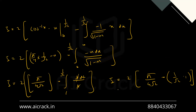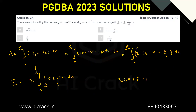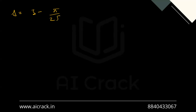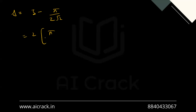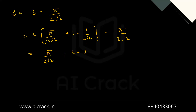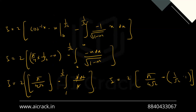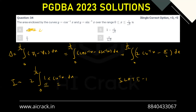Now, what we had to calculate was delta = i minus π/(2√2). So our delta was i minus π/(2√2). Here i is 2 times (π/(4√2) plus 1 minus 1/√2) minus π/(2√2). The π/(2√2) terms cancel out, and we get 2 minus √2 as the answer. So this option should be 2 minus √2 — this option was wrong in the actual paper. So A is the correct answer.